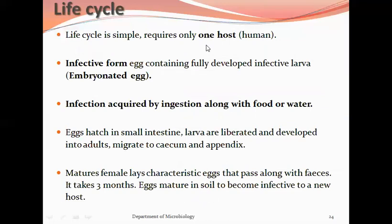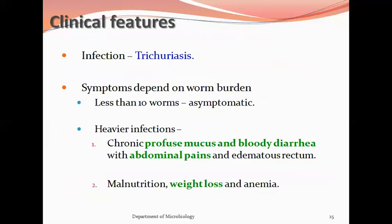The life cycle of Trichuris trichura is simple and requires only one host, completed in humans. Eggs containing a fully developed infective larvae are ingested along with contaminated food or water. Eggs hatch in the small intestine, releasing larvae that develop into adult worms, which migrate to the cecum and appendix where they mature into male and female. The mature female lays characteristic eggs in the cecum and appendix, which are passed with feces. The eggs then mature in the soil and become infective to a new host, continuing the cycle.